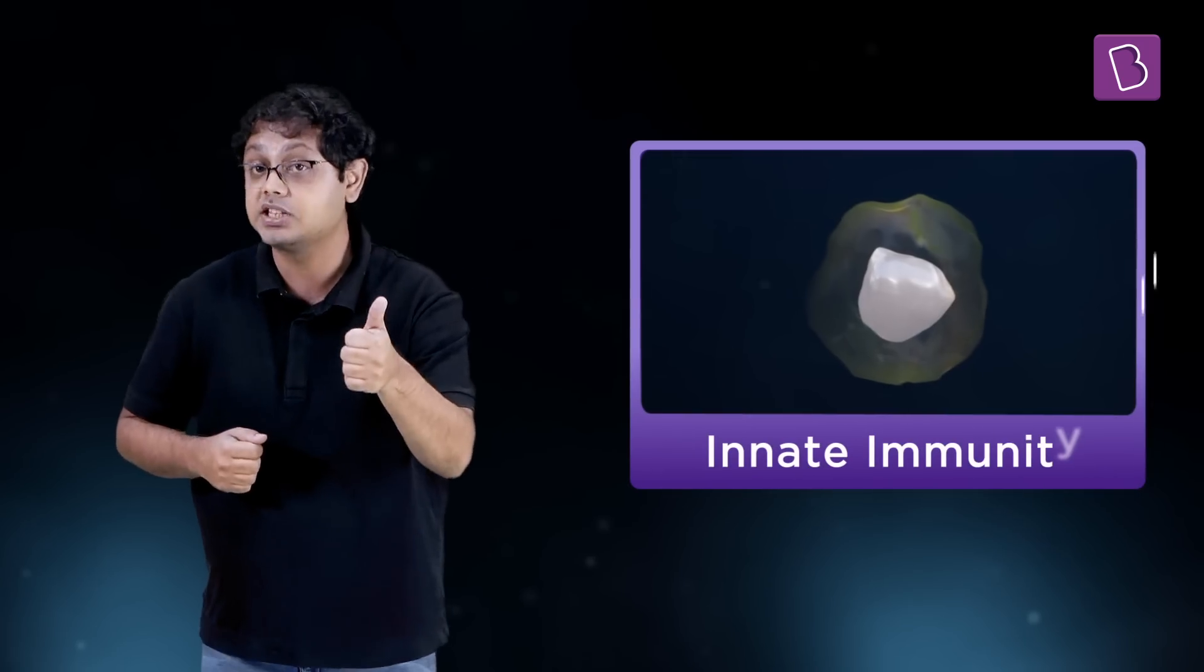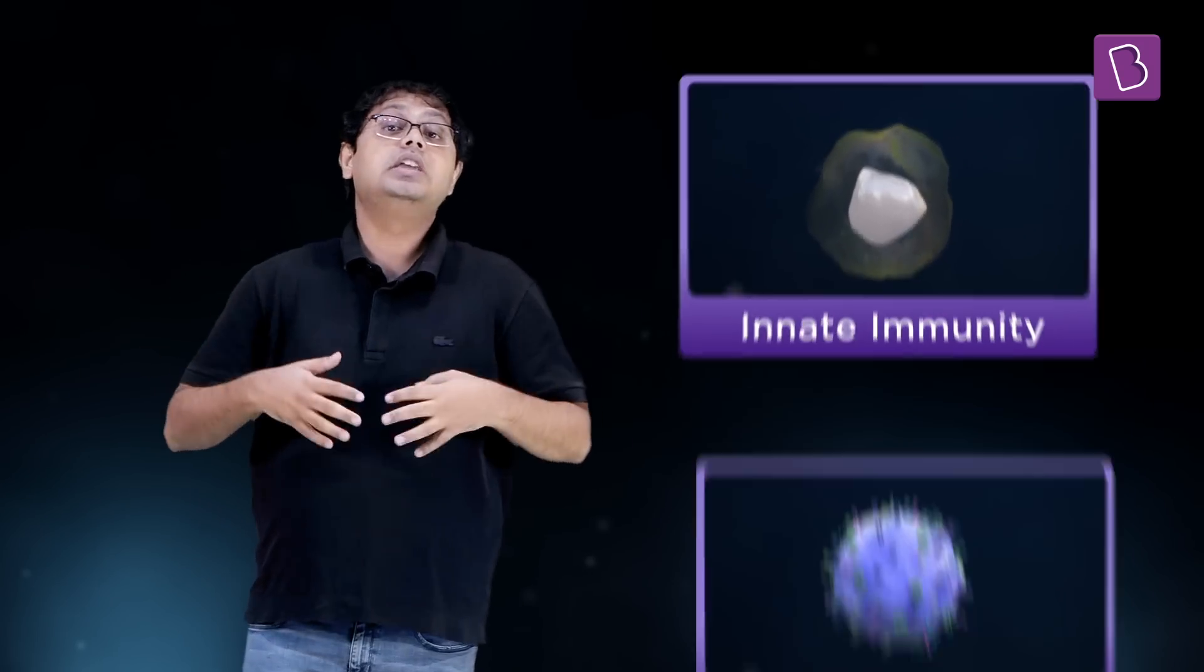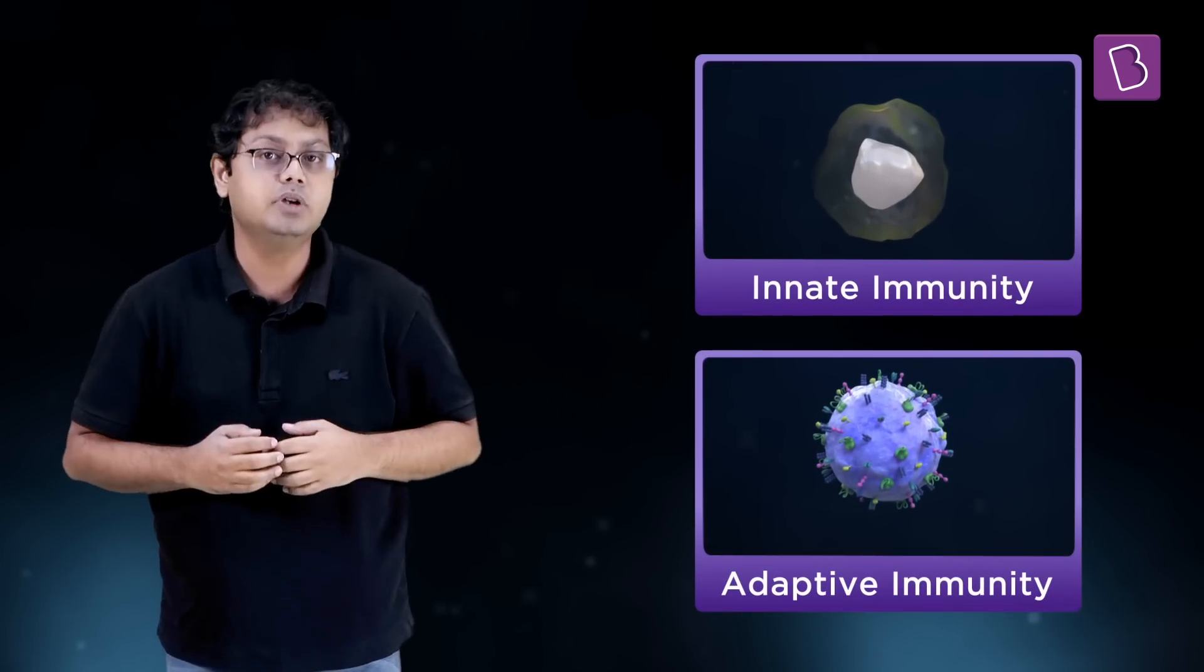Now, the immune system responds in two ways in order to protect us. One, the innate or non-specific immunity. And two, the adaptive or specific immunity.